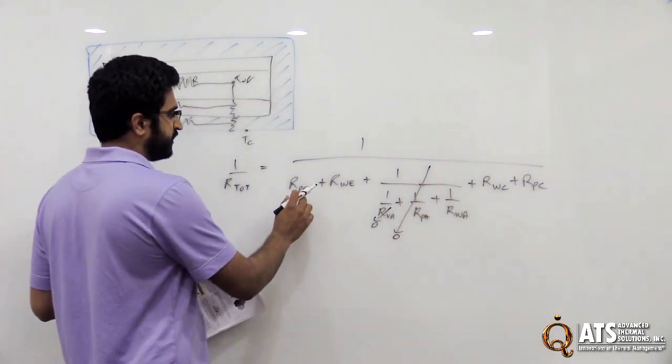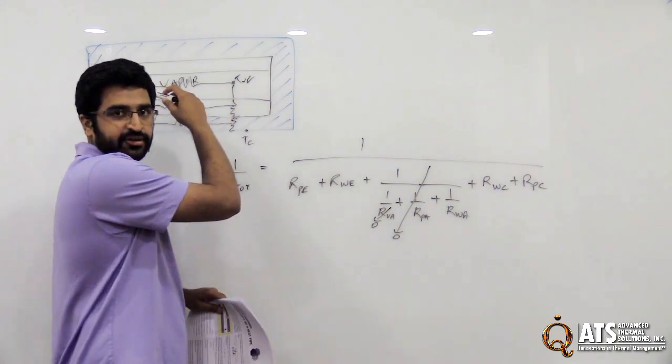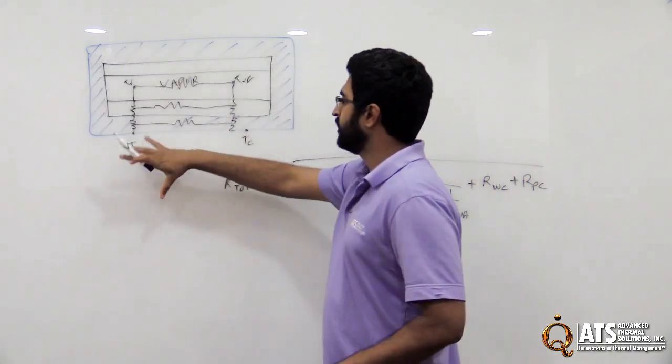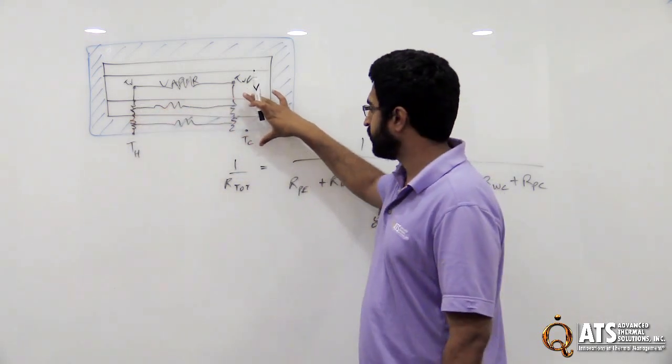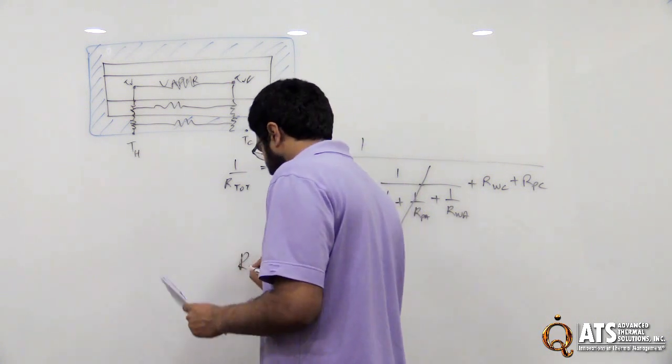And the resistance, the radial resistance in this direction in the evaporator is the same as in the condenser. So you can combine those as well. And so with that said, your final equation will end up being very simple.